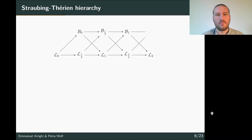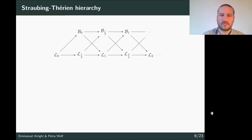Here is the inclusion relation of these hierarchies. At the bottom we have the Straubing-Thérien hierarchy and at the top the dot-depth hierarchy. Each level is included in the next half-level: L0 is included in L1/2, which is included in L1. Each level of the Straubing-Thérien hierarchy is included in the same level of the dot-depth hierarchy, and each level of the dot-depth hierarchy is included in the level plus one of the Straubing-Thérien hierarchy.